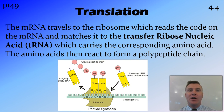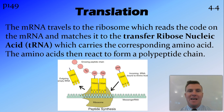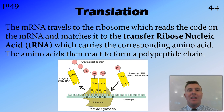Once it gets there, translation occurs. That mRNA goes to the ribosome. Inside the ribosome, the mRNA matches up with another piece of RNA called transfer ribonucleic acid, or tRNA. That tRNA has, at one end, the corresponding bases, while at the other end it has an amino acid. So that amino acid comes in and joins onto the amino acid next to it, and eventually this forms a polypeptide chain.